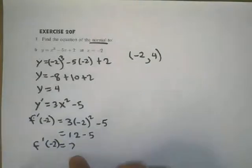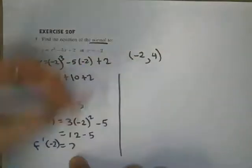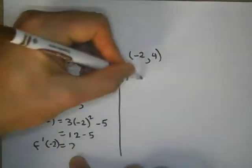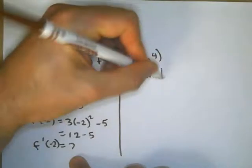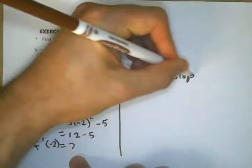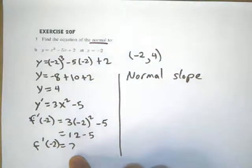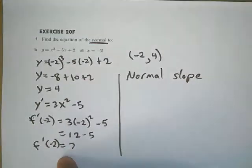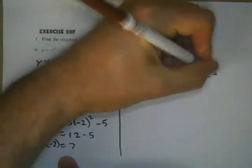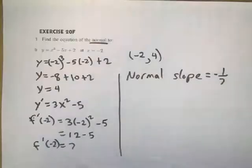Now if we're trying to find the normal, the normal slope is the opposite sign and the reciprocal. So the normal slope is going to be negative 1 over 7.